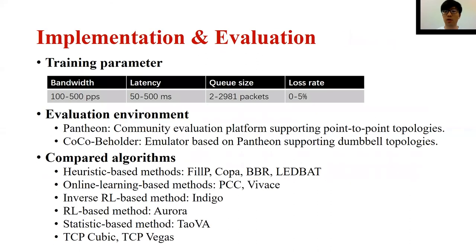We train our model using the same parameters as Aurora, with two network emulators for performance evaluation. The first is PSEAN, a community network environment evaluation platform supporting point-to-point topologies. The second is a Dumbbell topology emulator based on PSEAN. We compare AUTO with several state-of-the-art methods, including TCP congestion control methods Cubic and Vegas.